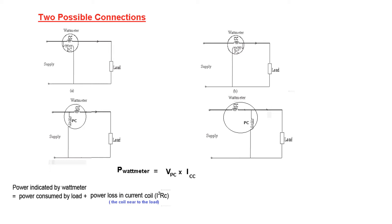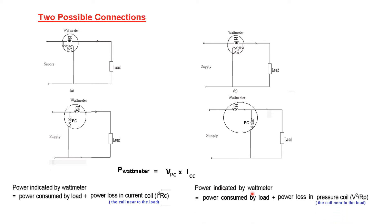For the second case, the power indicated by the wattmeter equals the power consumed by the load plus the power consumed by the potential coil, which is given by V² / R_p — the voltage squared divided by the potential coil resistance.